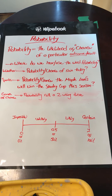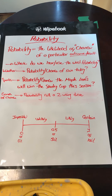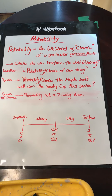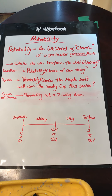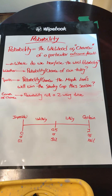When we say the word probability, we're saying the likelihood or the chance of a particular outcome or result. So where do we hear or use the word probability? We hear it in the weather — the probability or the chance of rain today. We hear it in sports, for example, the probability or the chance the Maple Leafs will win the Stanley Cup this season. And we hear it in games of chance, so the probability of rolling a two using dice.